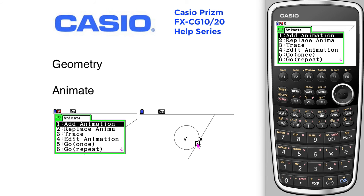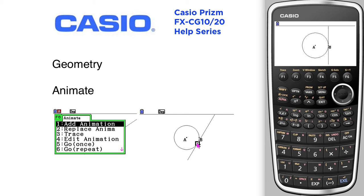I'm going to add animation, execute, F6. I'm going to go once. Point C is going to be traced around and it's going to be animated.